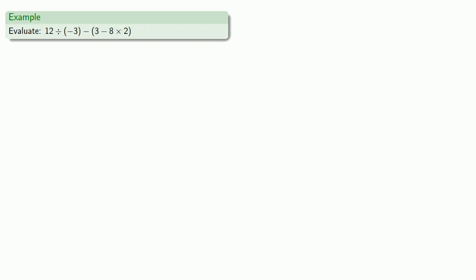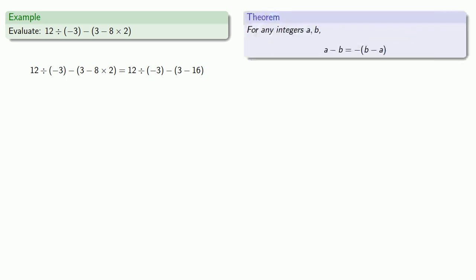And we can take a look at another horrible expression like this. Stuff inside the parentheses has to be taken care of first, and again this is negative 3, it's not an operation. The second set of parentheses, 3 minus 8 times 2, multiplication first, 8 times 2 is 16, everything else stays the same. 3 minus 16, well I'll pull in my theorem about subtraction of integers. So I know that 3 minus 16 is the same as negative 16 minus 3 and that's going to be negative 13, and everything else stays the same.